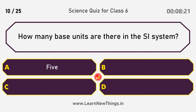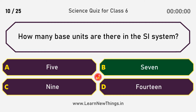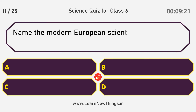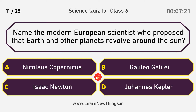How many base units are there in the SI system? Answer: 7. Name the modern European scientist who proposed that Earth and other planets revolve around the sun.